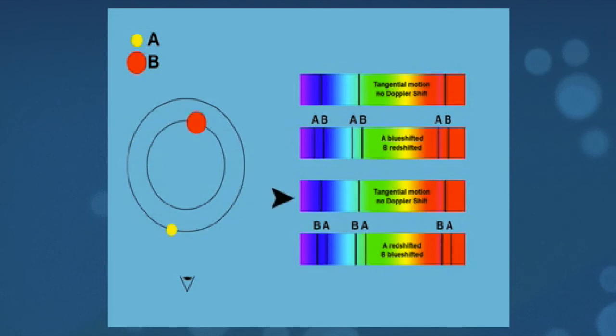And the one moving away from us is slightly red-shifted. So we can see the spectral lines moving back and forth. We can see one star's spectral lines being red-shifted while the others are being blue-shifted. And by watching this periodic motion in the spectrum, we're able to measure the period of the motion.